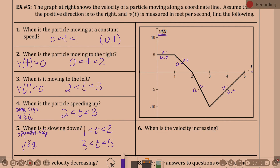Question six: when is the velocity increasing? We're looking for when velocity is increasing, which means when acceleration is positive — when the slope is positive. That's three to five.